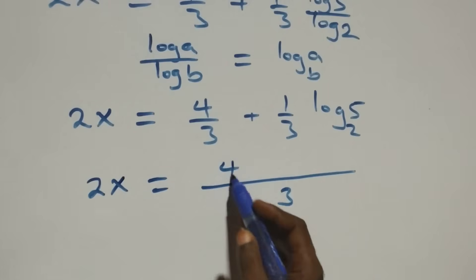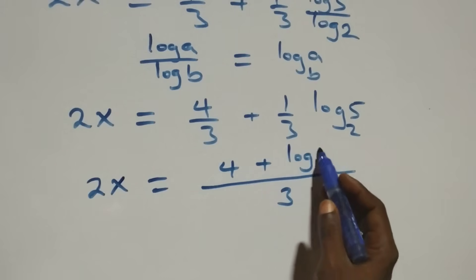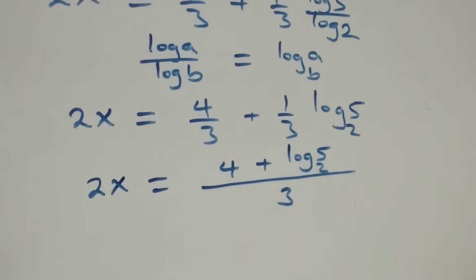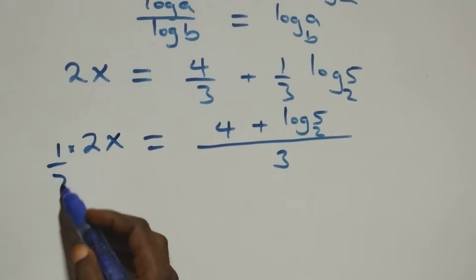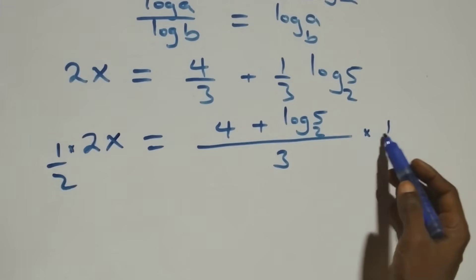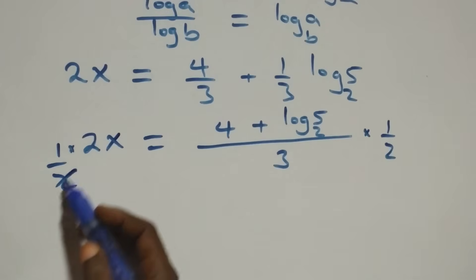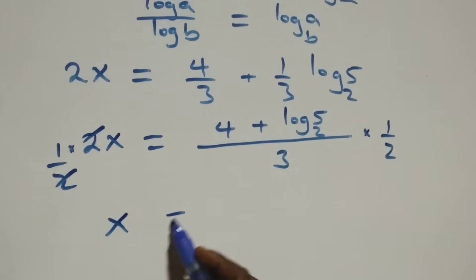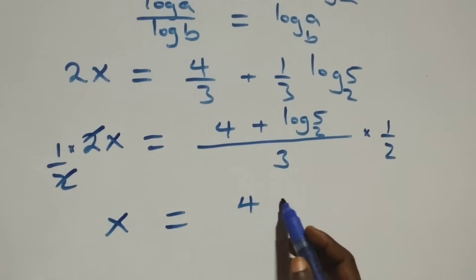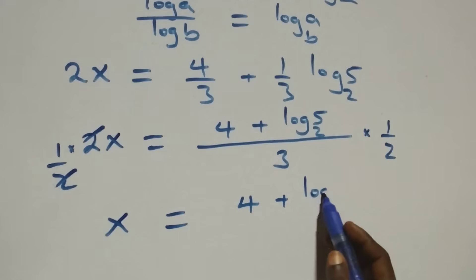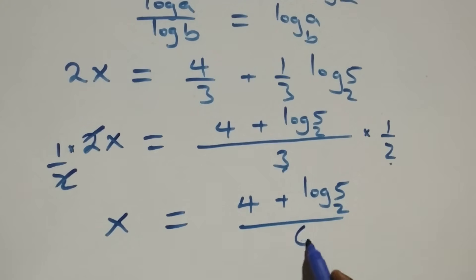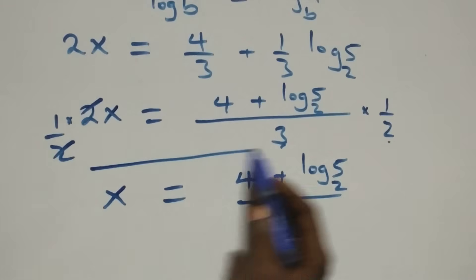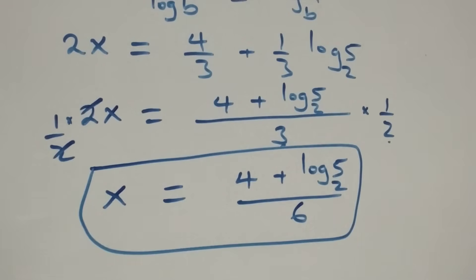Bringing the terms together as one fraction with common denominator 3, we have 2x equals 4 plus log 5 base 2, all over 3. Then we multiply both sides by 1 over 2. The 2 on the left cancels, leaving x, which equals 4 plus log 5 base 2 all over 3, times one half, giving x equals 4 plus log 5 base 2 all over 6.